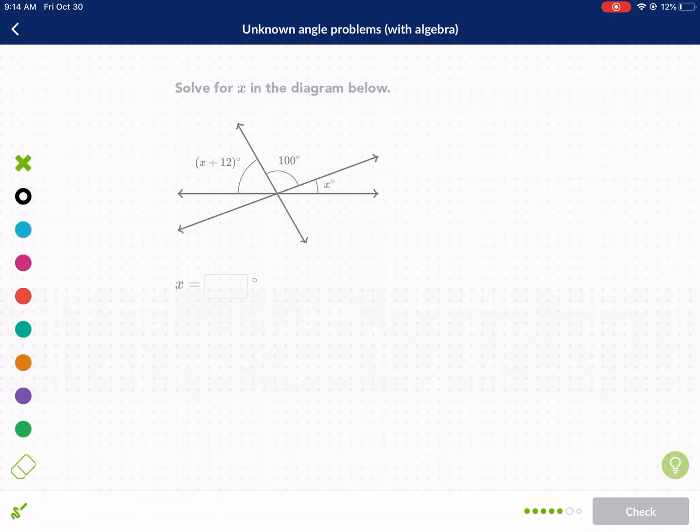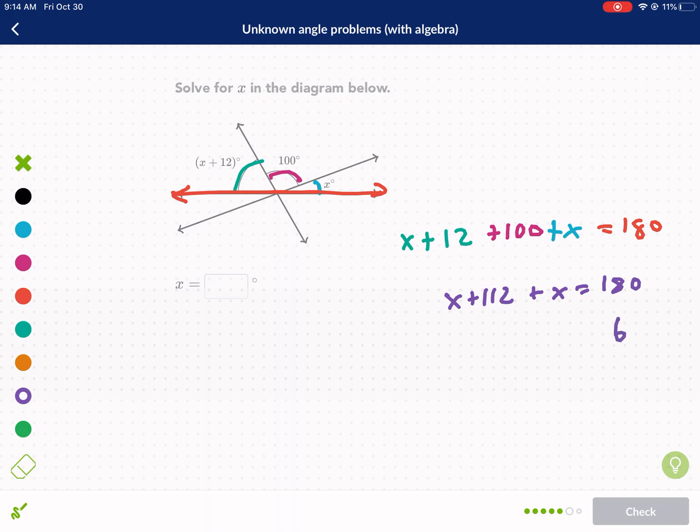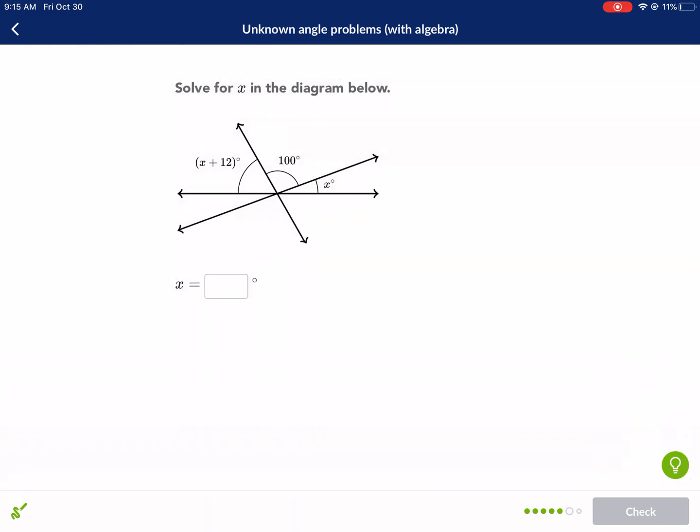This one's a little bit more complex because we have three angles here that are going to add up together to equal 180. You can see they all form this straight line here. So we're going to say X plus 12 plus 100 plus X equals 180. The first thing I would do is combine like terms. We have X plus 112 plus X equals 180. So we do 180 minus 112. I get 68 equals 2X divided by 2. I get X equals 34.